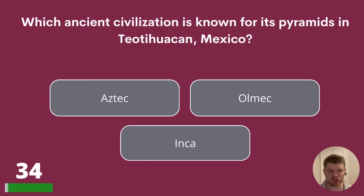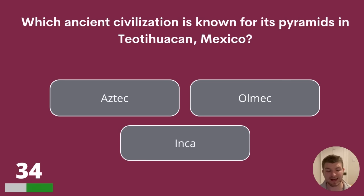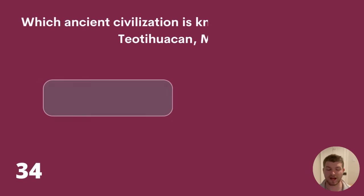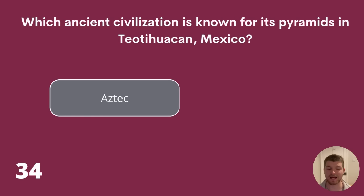Question 34. Which ancient civilisation is known for its pyramids in Teotihuacán, Mexico? Aztec, Olmec or Inca? The answer is Aztec.